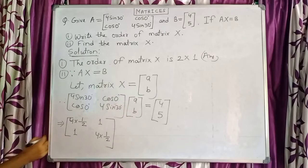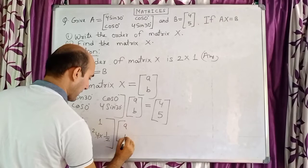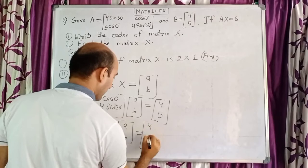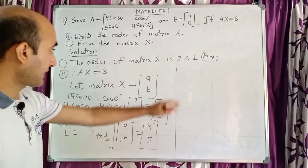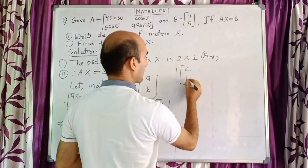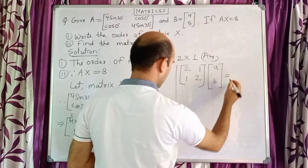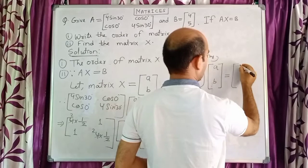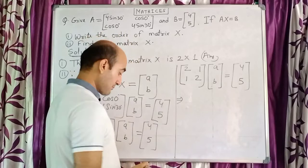So 4 × sin 30° = 4 × 1/2 = 2, and cos 0° = 1. After substituting and cancelling, the matrix A becomes [2, 1; 1, 2]. So the equation is [2, 1; 1, 2] × [a; b] = [4; 5].